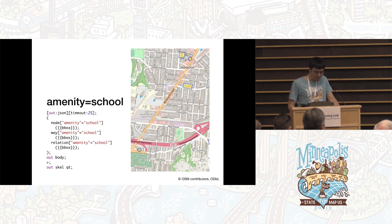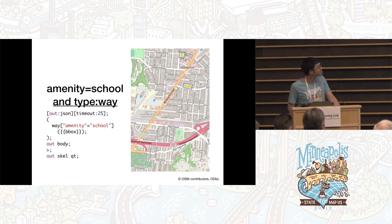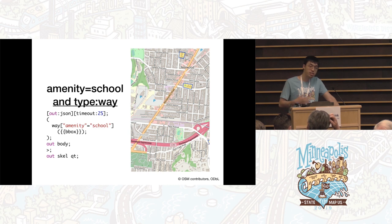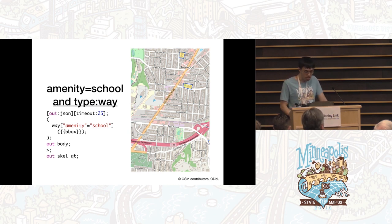Here I've added 'type:way', and you can see the query actually got simpler — it's only looking for ways now, not for nodes and relations. That can make the query run a little faster depending on what you're searching for. So if you know you only care about one type of element, you should always add the type operator.